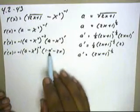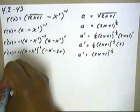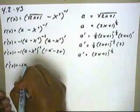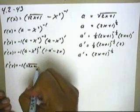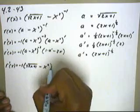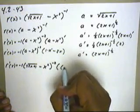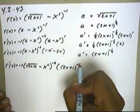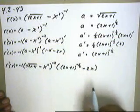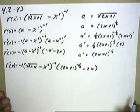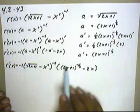From there, we just need to replace our a's and a primes. So r prime of x is going to equal negative one, and our a is going to be the square root of 2x plus 1 minus x squared, all to the negative second power. A prime is going to be 2x plus 1 to the negative one half power, minus 2x. There's a little bit of cleanup — this negative can distribute here.